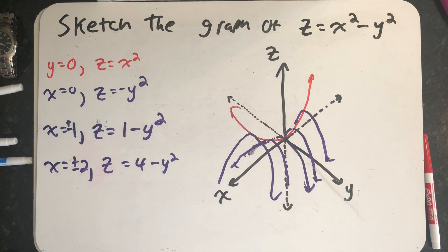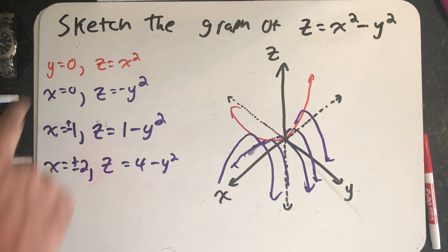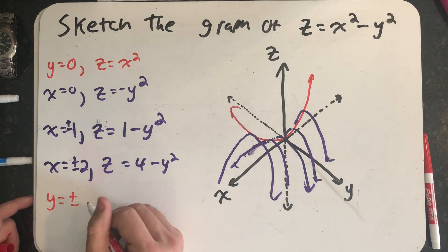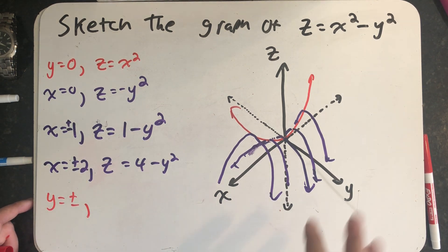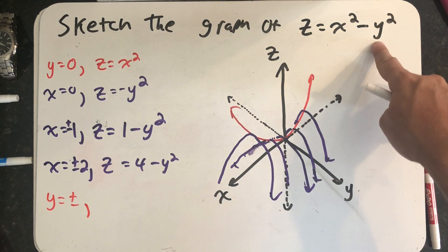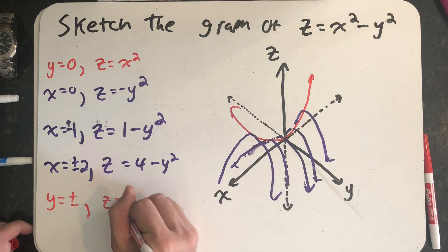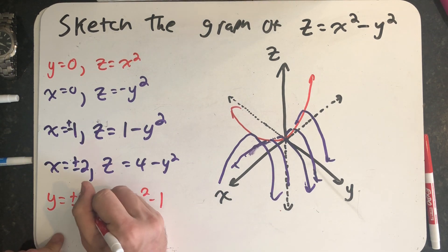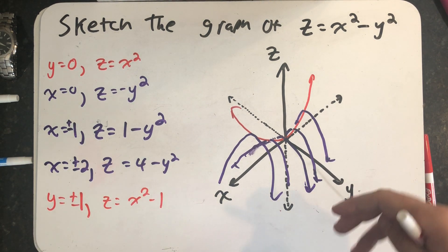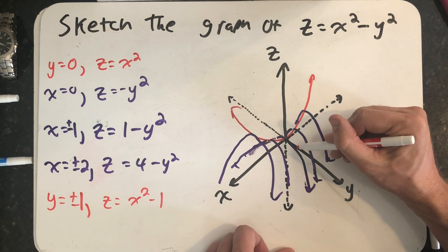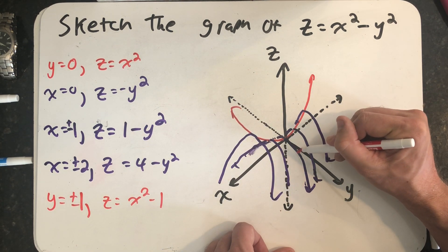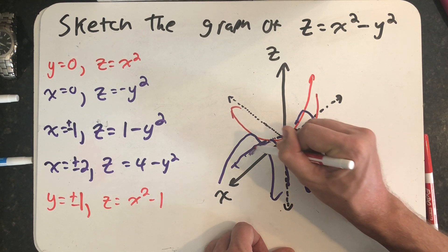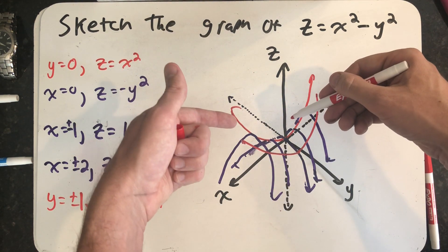Now let's go back and think about letting y equal plus or minus one. If y is equal to plus or minus one, I get x squared minus one. So I get a parabola where y is plus or minus one. At plus one here, I get a parabola that looks like it's been shifted down from that first red parabola I drew. On the other side, I'd get the same thing.